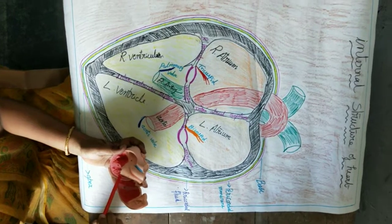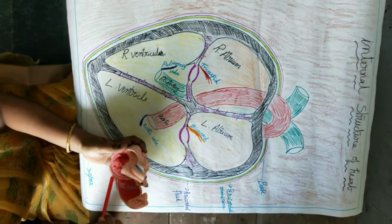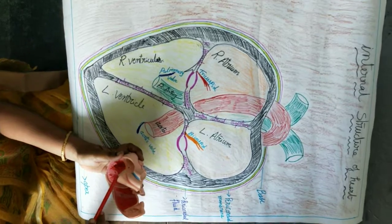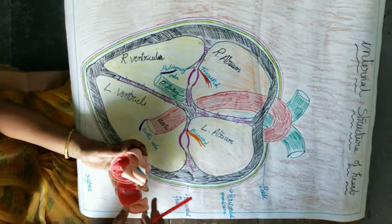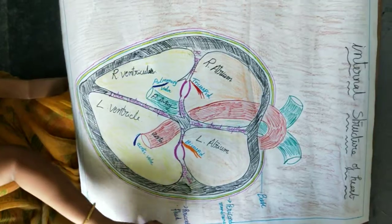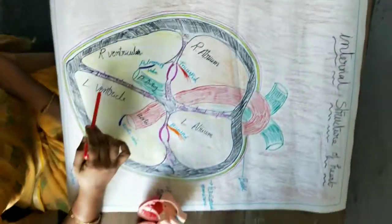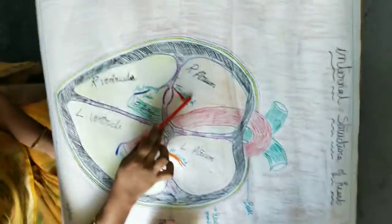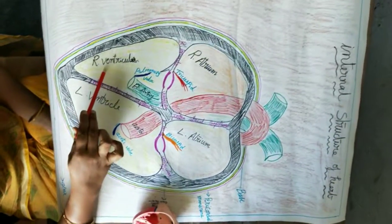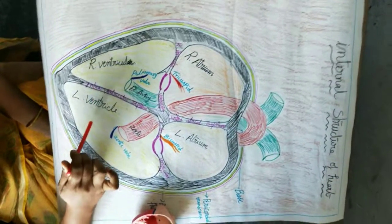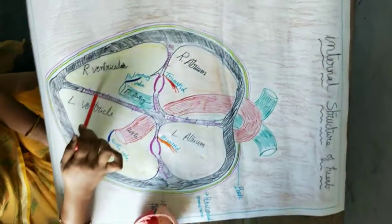Both ventricle chambers connect the blood from the vessels. I will show you the rough diagram of the heart — this is the internal structure of heart. Here we can see the right atrium, left atrium, right ventricle, and left ventricle. These are the muscular walls.